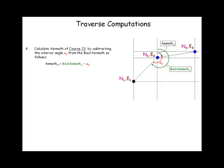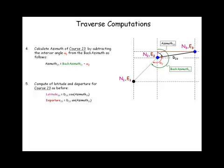Now that we have the new azimuth as 2,3, we can calculate a new latitude and a new departure. And those are going to be taking the distance 2,3 and projected in northerly direction and easterly directions. So now that we have the latitude and departures, we will be able to compute the next coordinates.